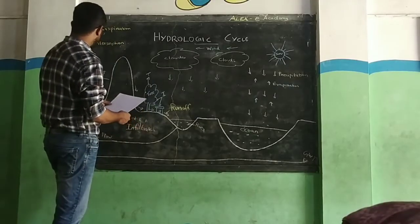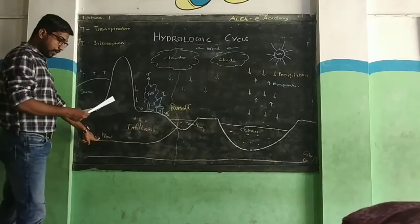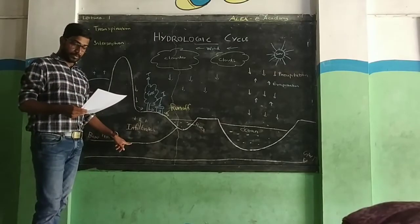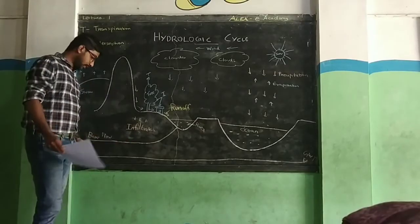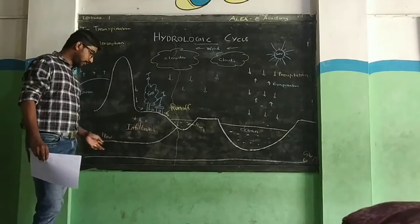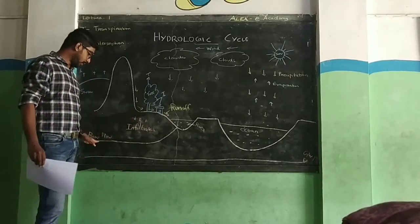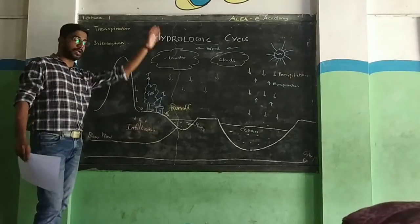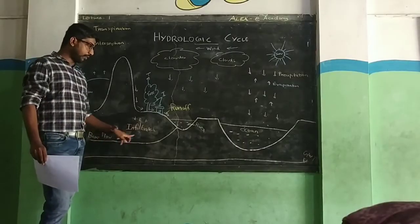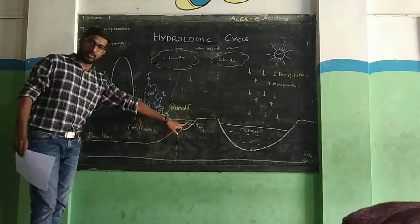The next term is base flow. Base flow is the water flowing at a certain depth below the ground — groundwater flows at that level. The base flow will raise the river or stream level.